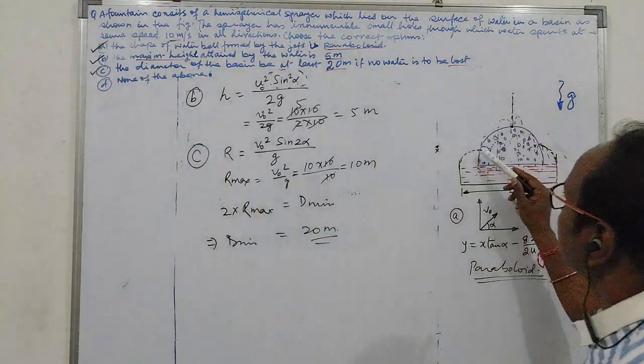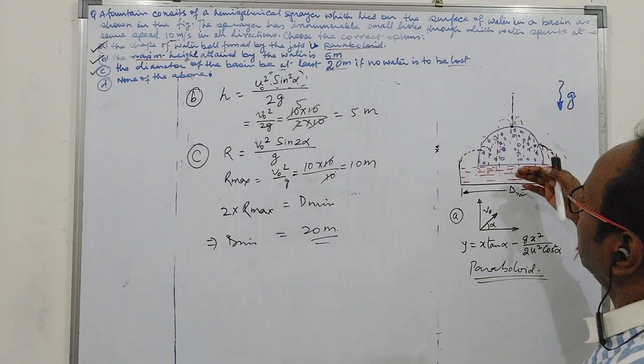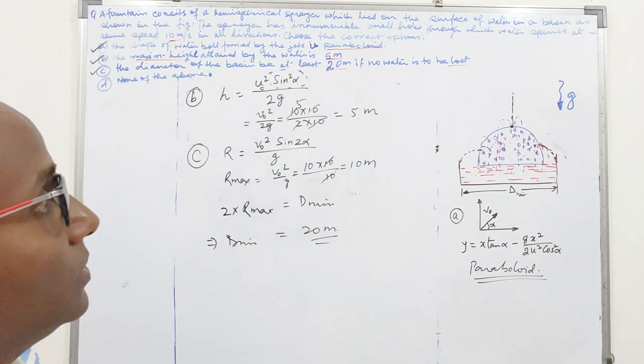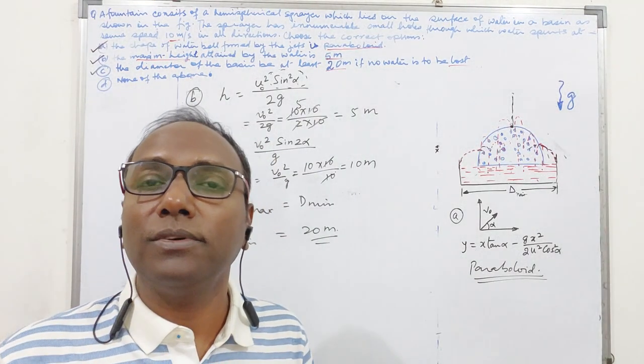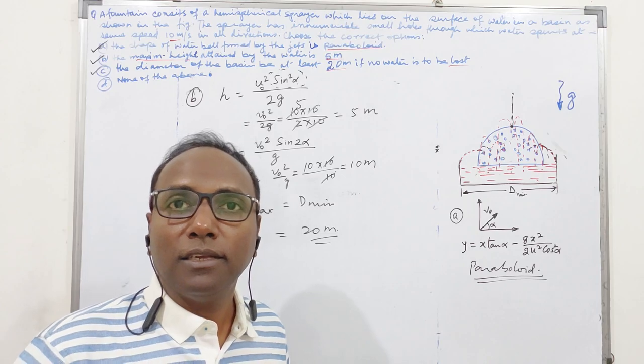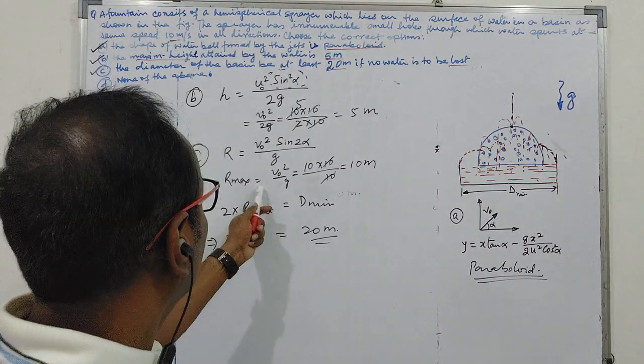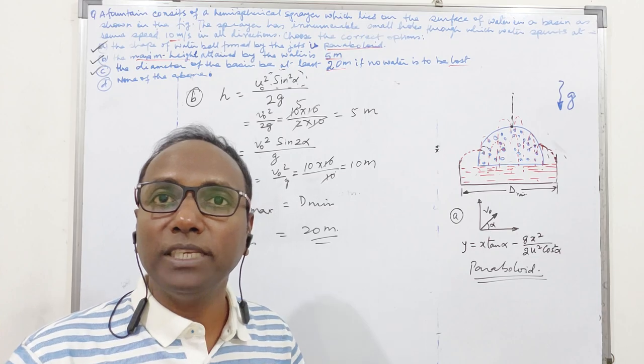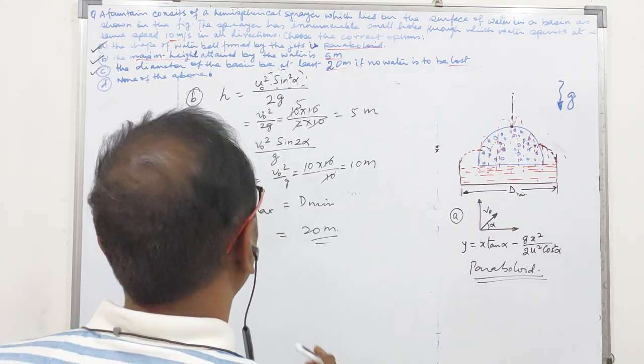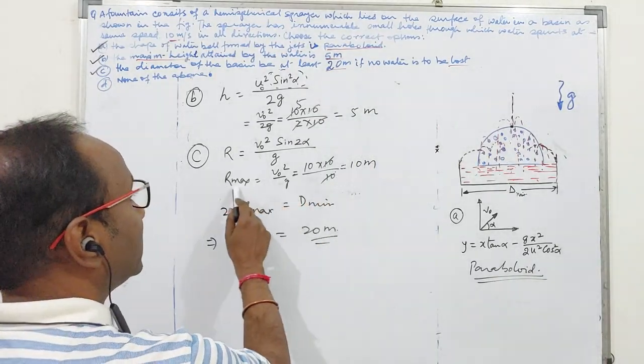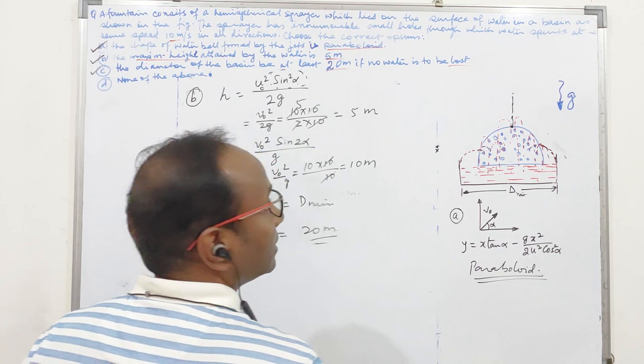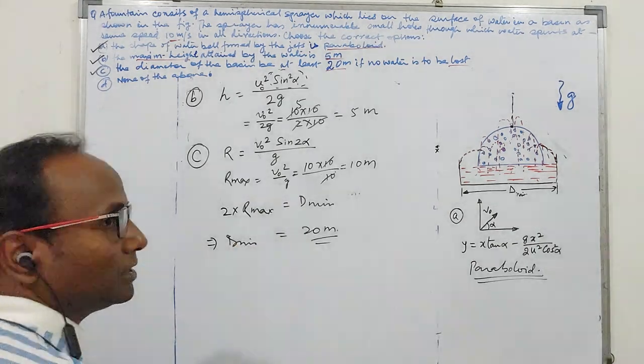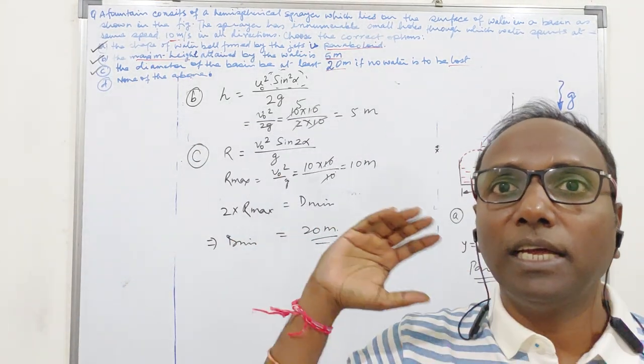See the whole idea is that water should not come out of the boundary. We should consider those holes from where the water is coming and which can travel to a maximum range. So if we know the maximum range, accordingly we will make the boundary of that basin. Our maximum range we got is 10 meter in radius, so its diameter should be 20 meter.